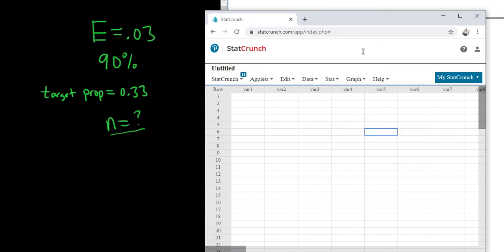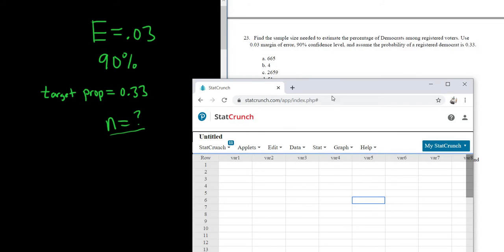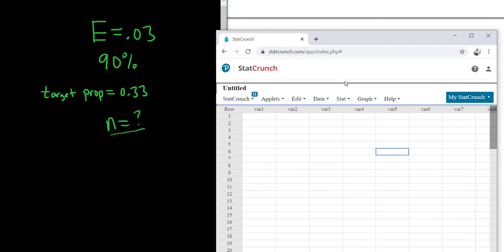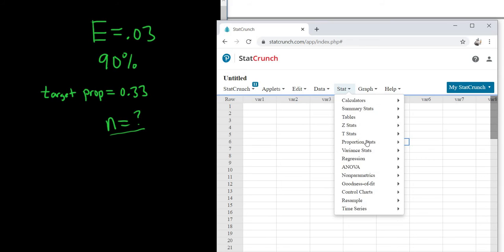and then you go to with sample size. So again, because it says estimate percentage, you know it's going to be proportions. So you go to stat, proportion stats, one sample, and then with sample size.